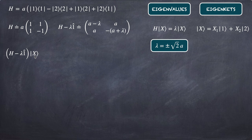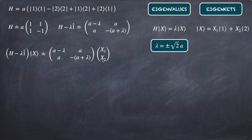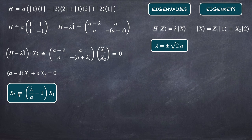To find the eigenkets, we apply (H − λI)|X⟩ = 0. Writing this matrix equation with components x₁ and x₂ and setting it equal to zero, the first equation gives (a − λ)x₁ + a·x₂ = 0. Solving for x₂, we get x₂ = (λ − a)/a · x₁, which is (λ/a − 1) · x₁.